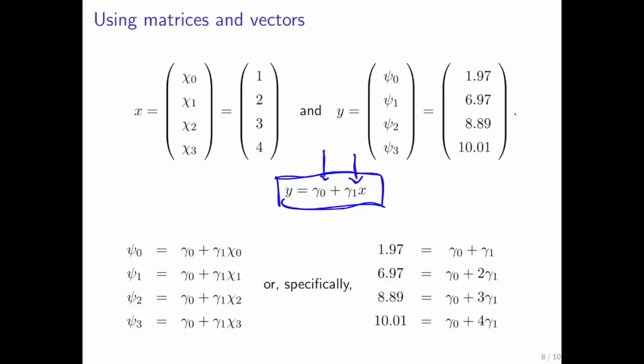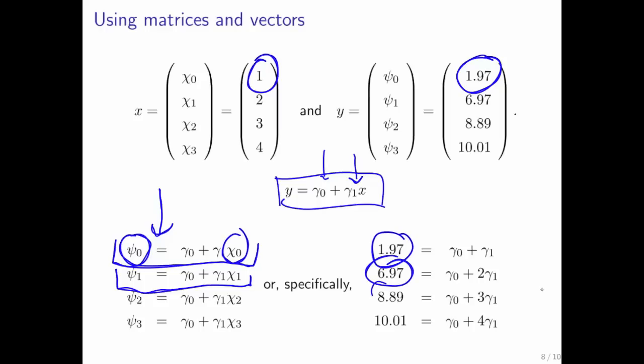And we know that that line has to go through the point 1, 1.97, etc. In general, the line has to go through the point chi 0, psi 0, which means that this equality must hold. And then this equality must hold because it has to go through the point chi 1, psi 1, etc. And if everything was ideal, then these all would be equalities because there is a line that goes through exactly all of these points. And if we then plug in actual numbers here, we get these right-hand sides, and we get these equations on the right here.